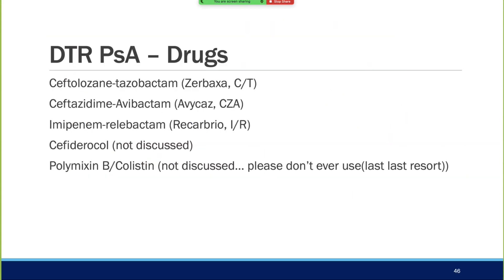Difficult-to-treat Pseudomonas drugs: Zerbaxa (ceftolozane-tazobactam) is the main workhorse; Avicaz (ceftazidime-avibactam); Recarbrio (imipenem-relbactam); cefiderocol is listed but won't be discussed. Polymyxin and colistin are listed for pan-resistant cases but should be absolute last resort given toxicities and the difficulty in ascertaining actual MIC breakpoints for Pseudomonas.